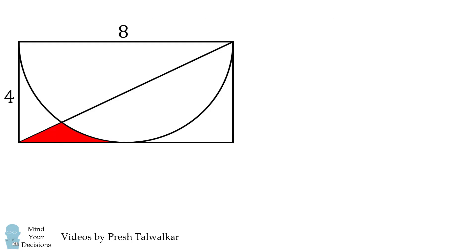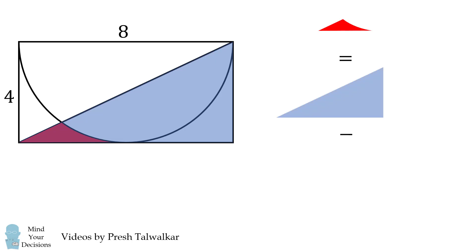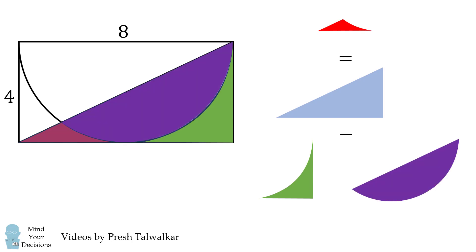So how can we solve for the area of this red shape? We'll solve it using the following equation: the area of the red shape is equal to the area of this right triangle minus the area of this green shape minus the area of this circular segment. So let's solve for the area of each of these shapes.